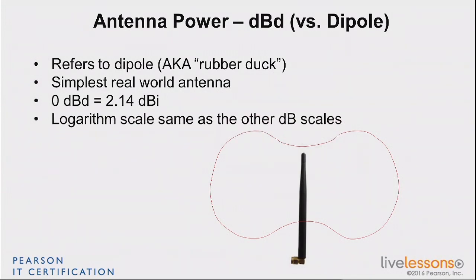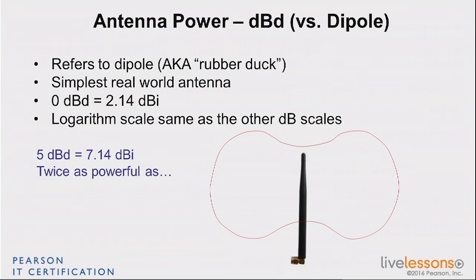So it's the same scale, the same logarithm, the same rule of 3, and so on. You just have a different starting point. Instead of starting from ground zero, you start from 2.14 — and that's it. So if you have a 5 dBd antenna, you can say: 5 dBd plus 2.14 equals 7.14 dBi.